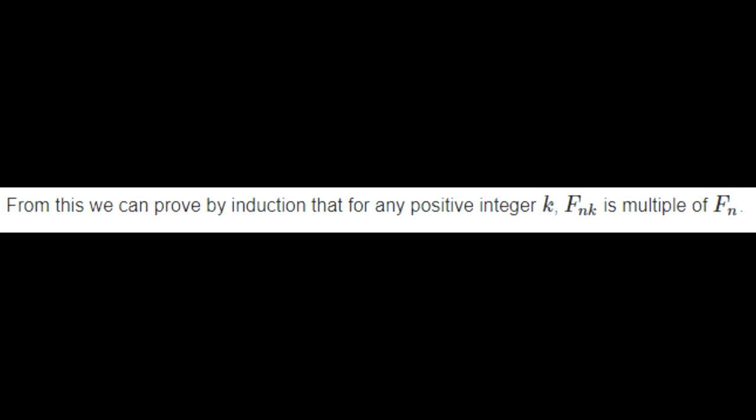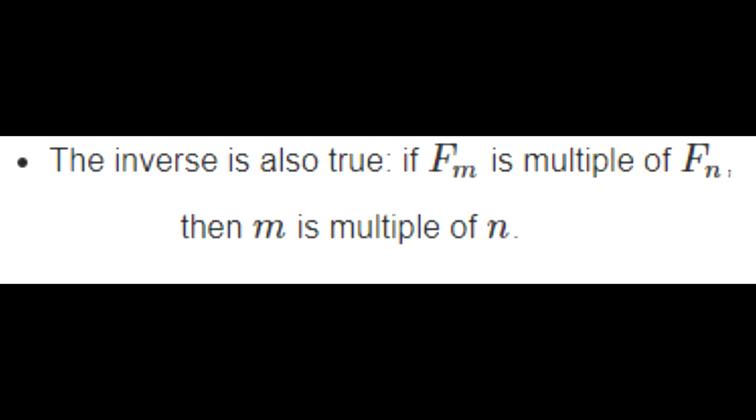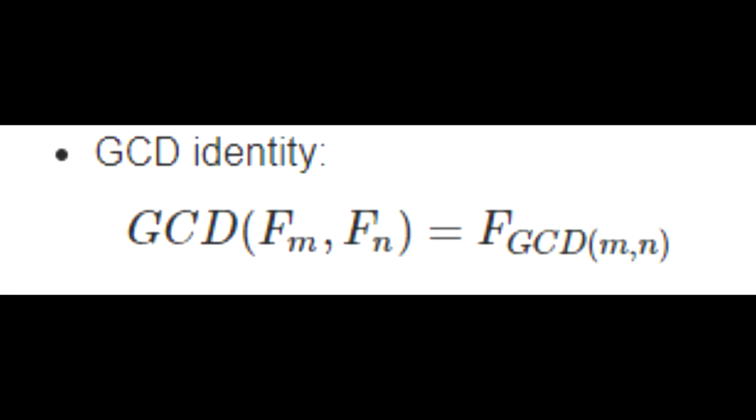You could use that pretty crazily with GCD though. So the inverse is also true. If the mth term is a multiple of the nth term then we know m is a multiple of n. This identity is kind of crazy.